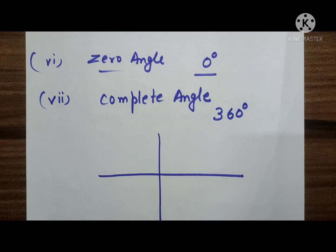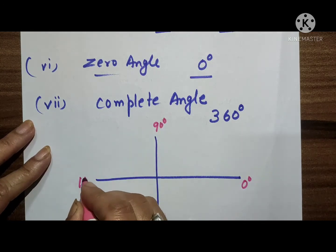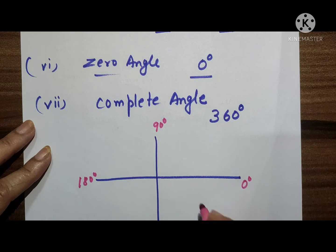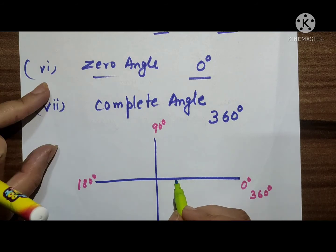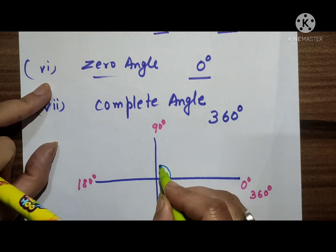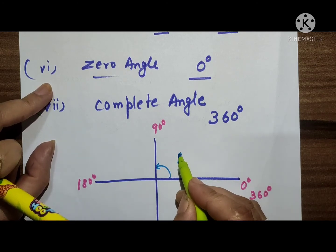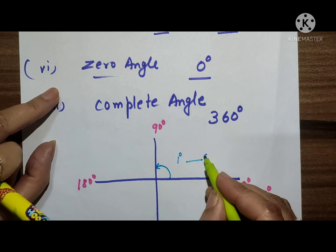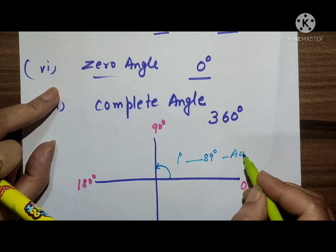This is 0 degrees, this is 90 degrees, this is 180 degrees, and this is 270 degrees. When we complete a full round, that is 360 degrees. Any angle from 1 degree to 89 degrees — all angles in the middle — will be acute angles.